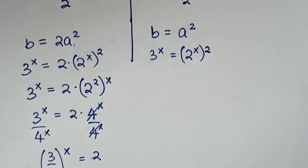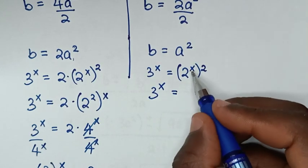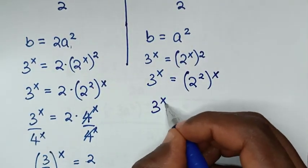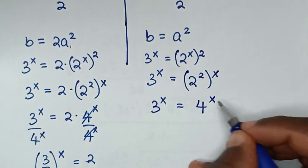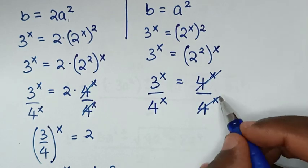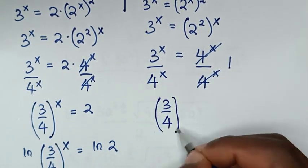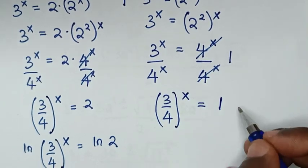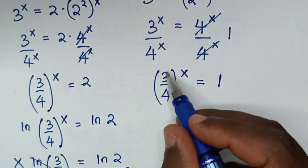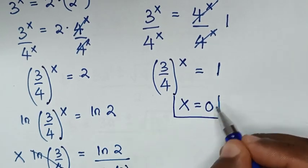For the second solution, when it is negative: b equals 3a² minus a², which is 2a² over 2 — that is a². So 3^x = (2^x)² = 2^(2x) = 4^x. Dividing both sides by 4^x: (3/4)^x = 1. Since any number, even a fraction, raised to the power of 0 is 1, therefore x = 0. This is the second value of x.